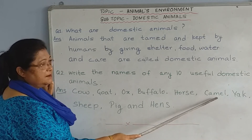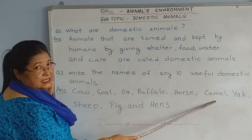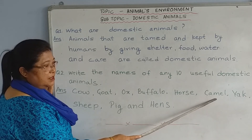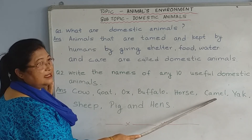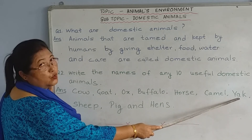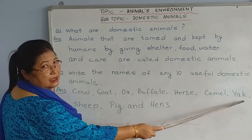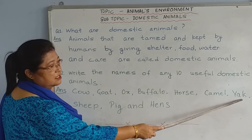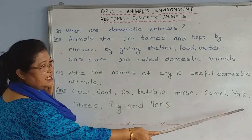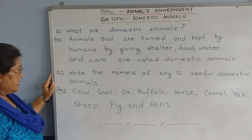Camel is especially found in desert areas. Camel also carries loads and carries people. Yak is found in cold, high altitude areas. Yak gives us milk, and from milk we get so many things — so many products are made from milk.